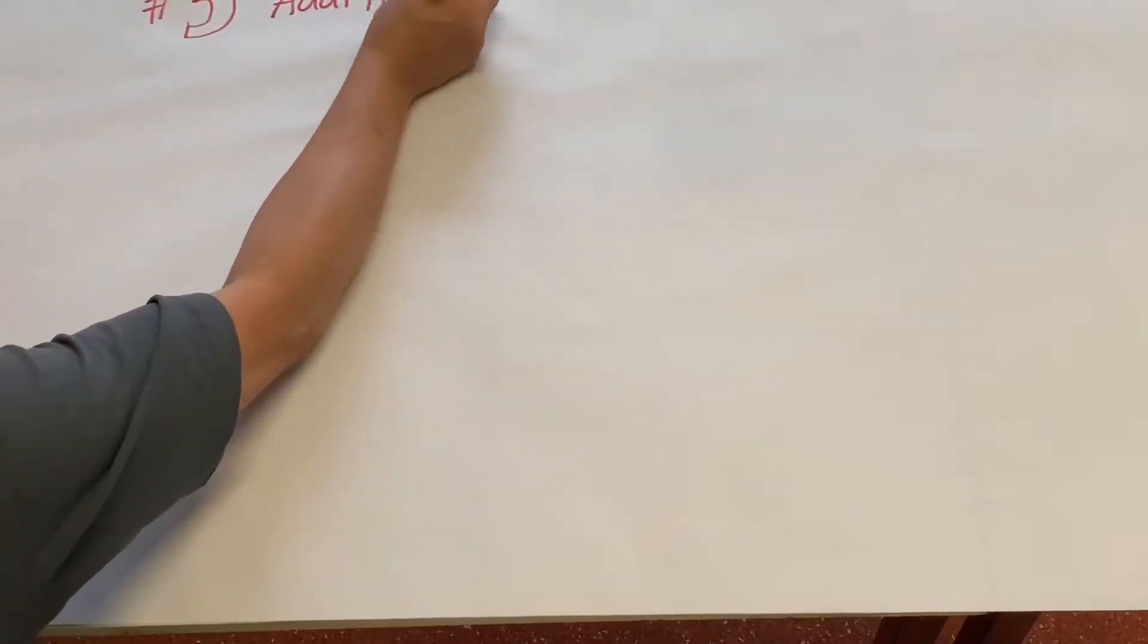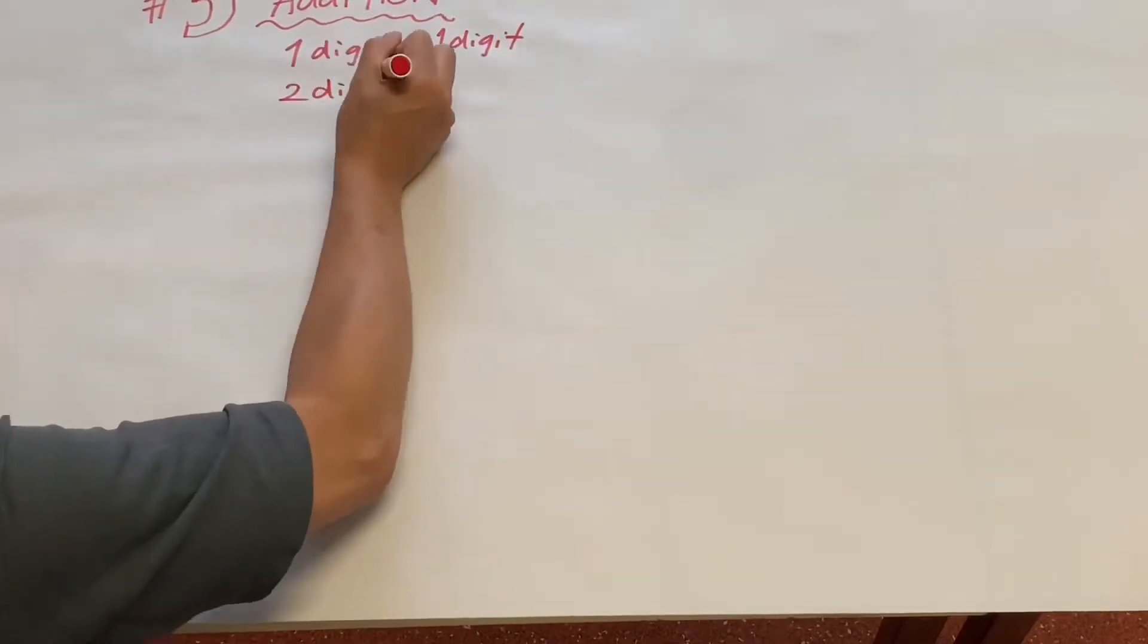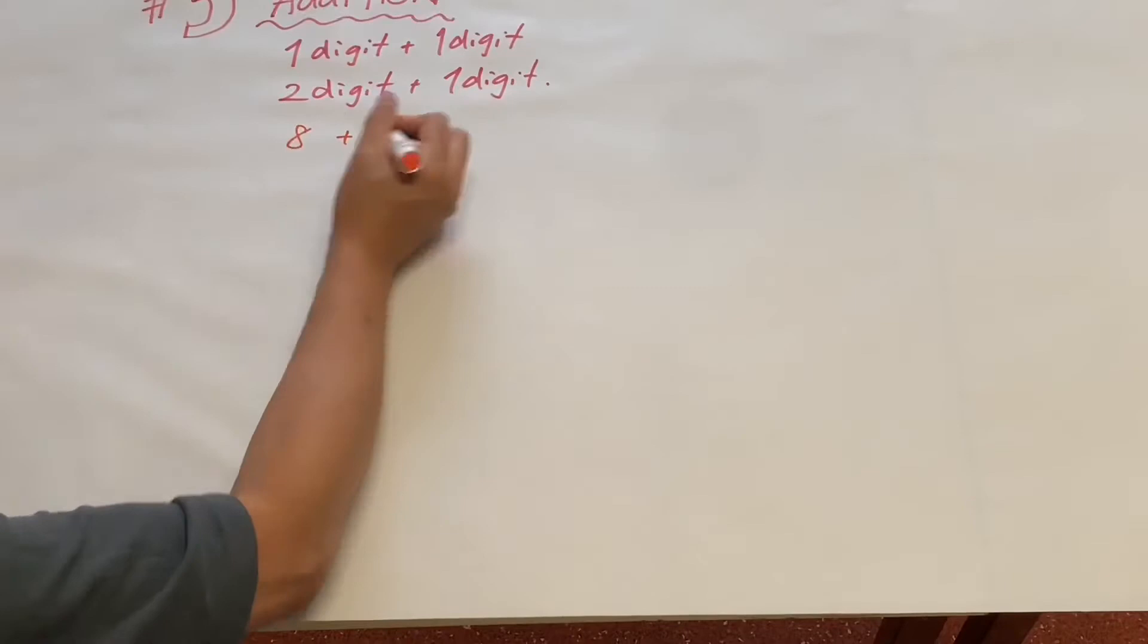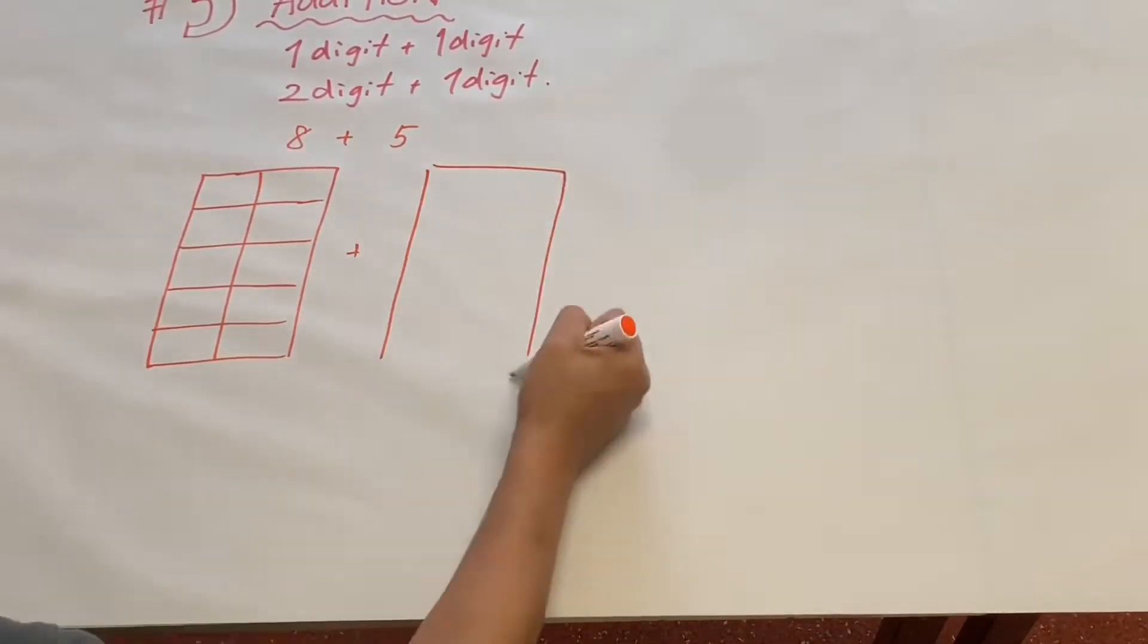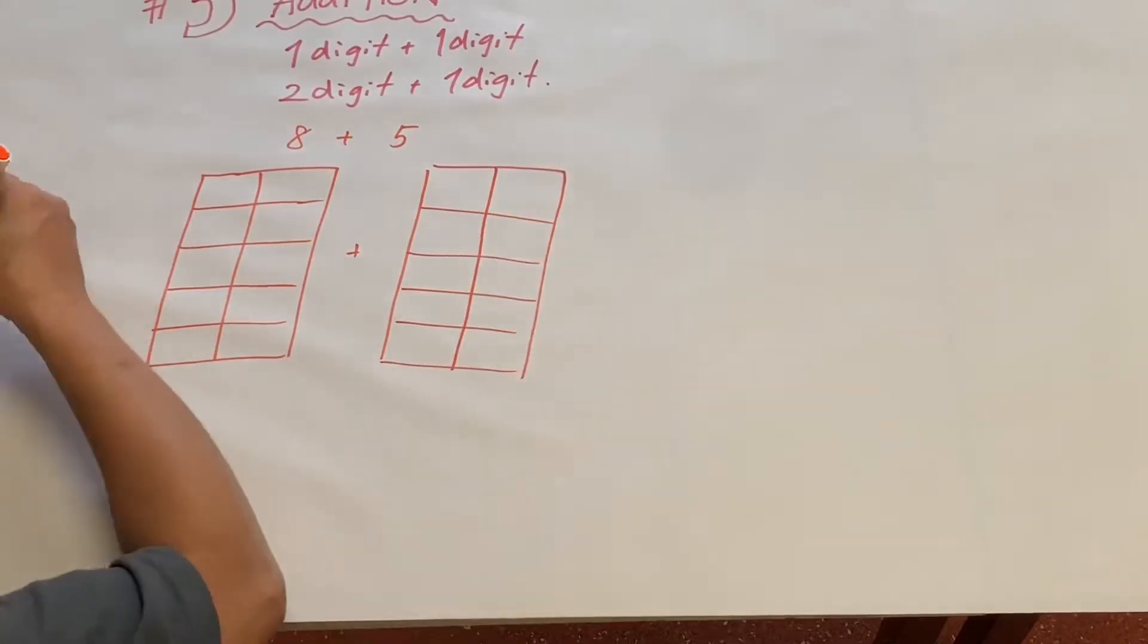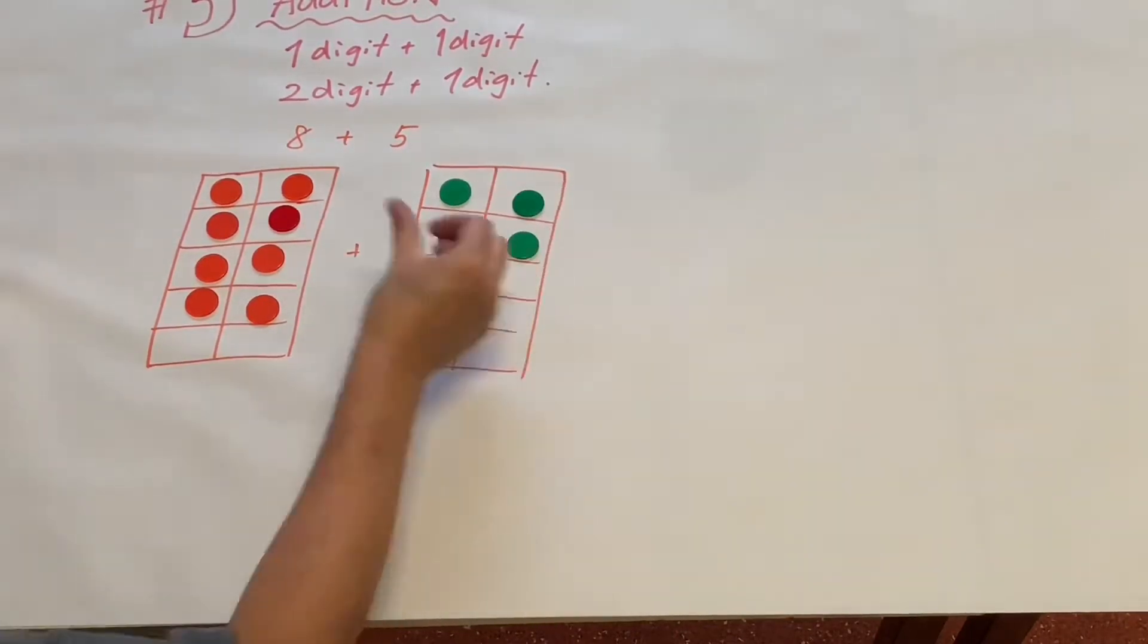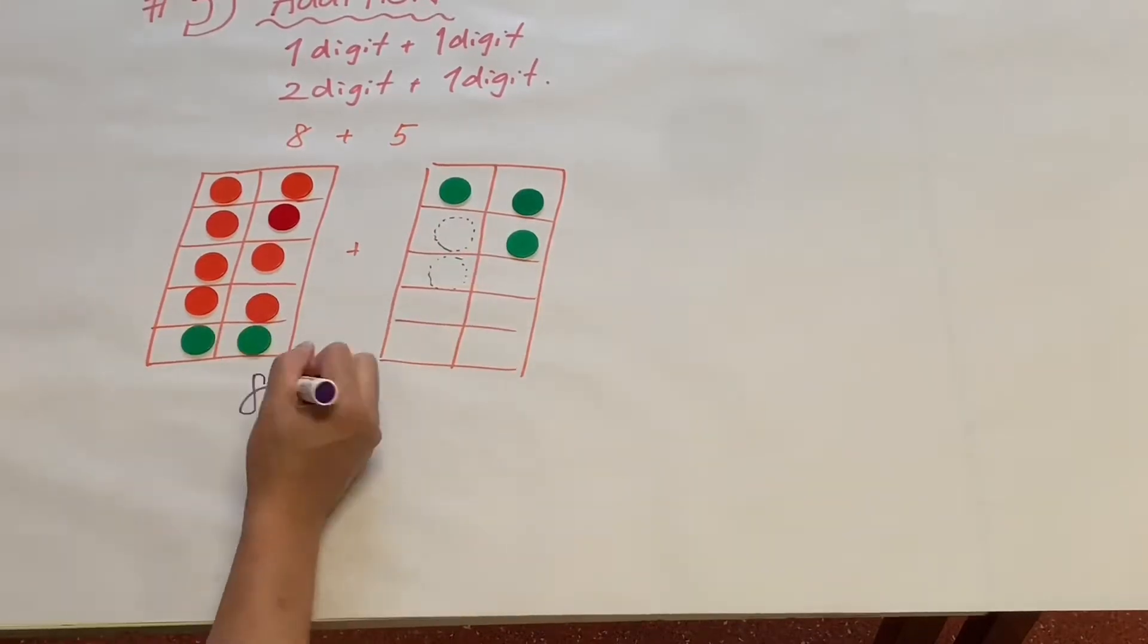This is number five. Number five is about addition. We're going to add one digit number, one digit number, one digit number utilizing the frames of ten. So for example, eight plus five is going to be ten plus three, which is thirteen.